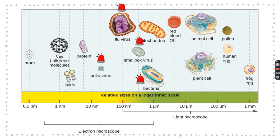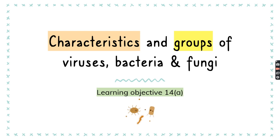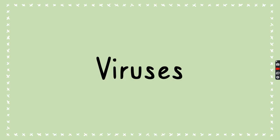You can only see them under a microscope — not just the light microscope we find in the lab, but very special microscopes. Electron microscopes are pretty good for that. So let's talk about the characteristics and groups of viruses, bacteria, and fungi. This is your learning objective 14a.